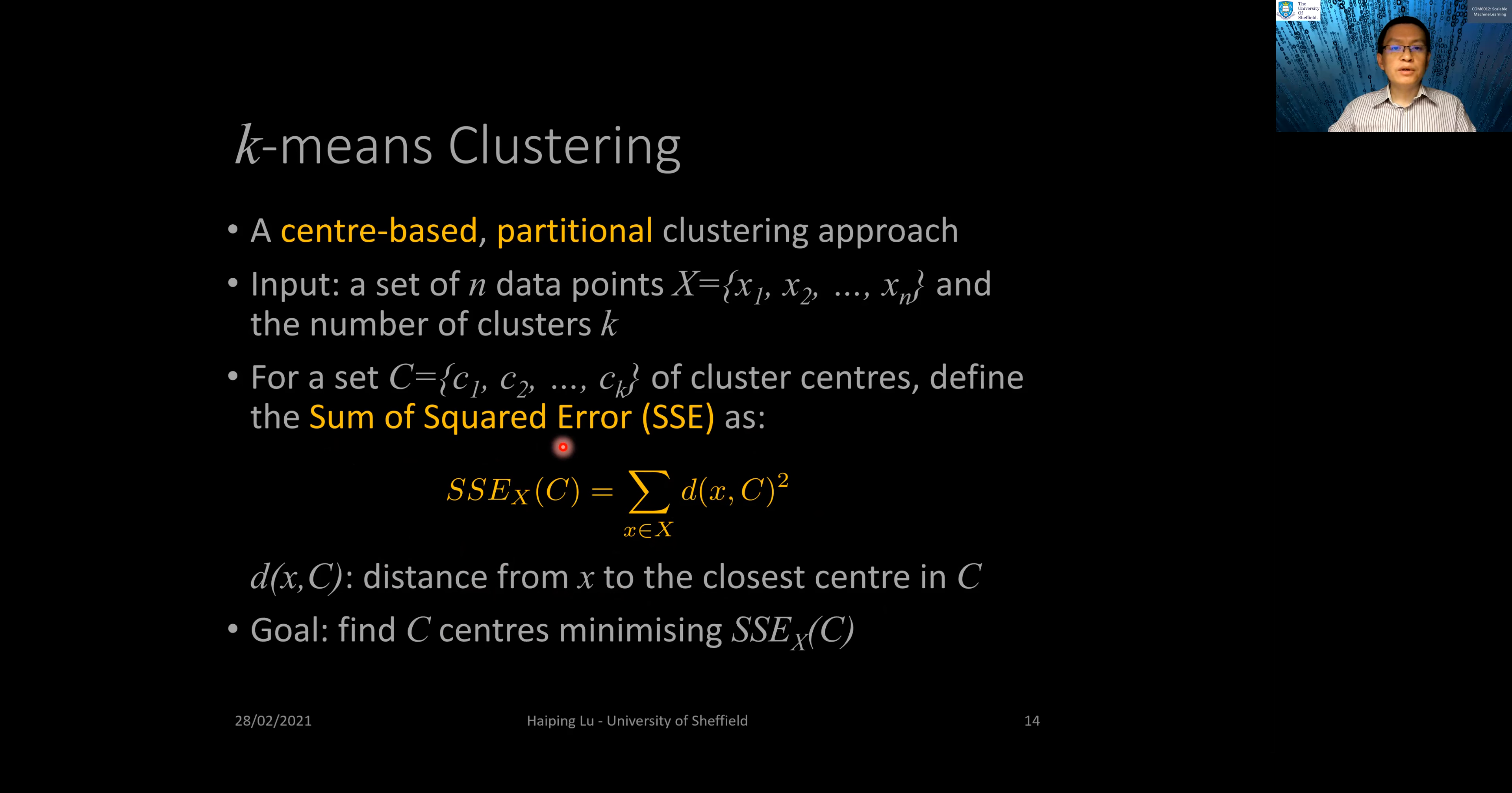Therefore, the goal of k-means clustering is to find the C centers or centroids that minimize the sum of squared error as defined above.